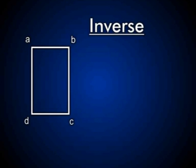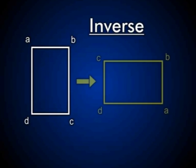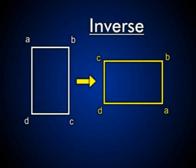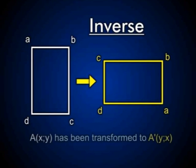Have a look at this example — a rectangle with coordinates A, B, C, and D given. We are now going to do an inverse, which means every x coordinate of the vertex becomes the y coordinate, and every y coordinate becomes the x coordinate. Look at the new shape that it forms — it's almost as if we've rotated it around the line y = x.